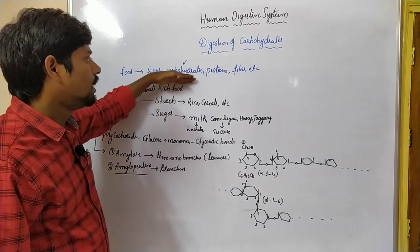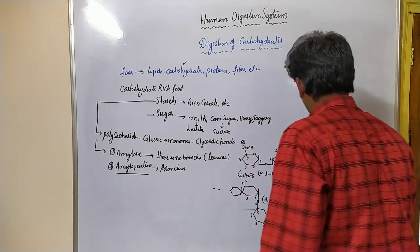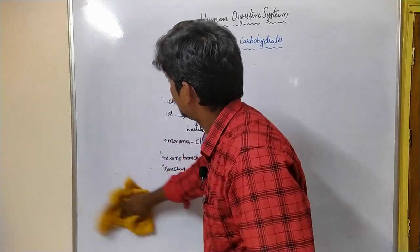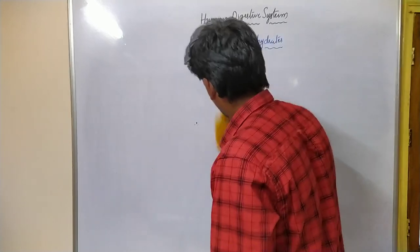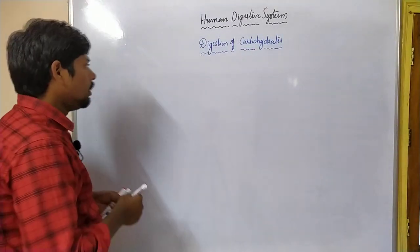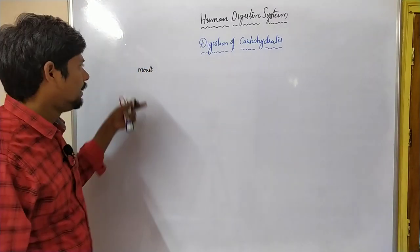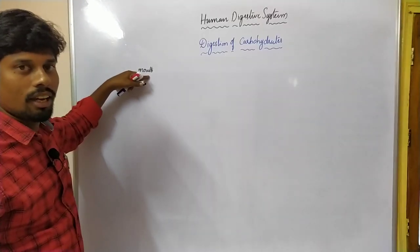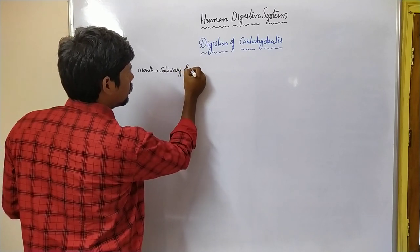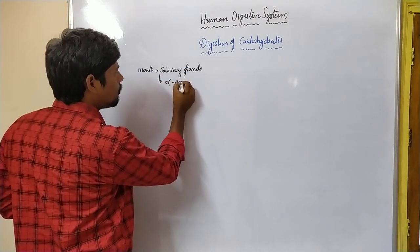Let us see how digestion takes place in the digestive tract of the human digestive system. The human digestive system starts at the mouth. If you take any type of carbohydrate-rich food, it starts at the mouth and ends at the anus. In the mouth there is a gland — the salivary glands — which produce saliva. That saliva contains the enzyme alpha amylase.